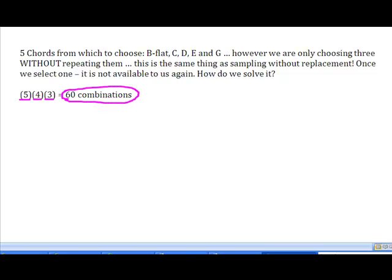And when I multiply five times four times three, I get a possible sixty combinations. So, every time I use one, I have one fewer from which to choose.